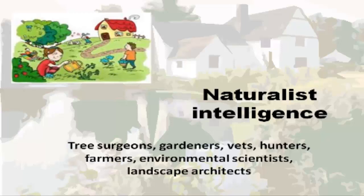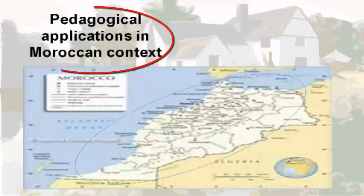Naturalist intelligence simply means understanding nature. People with this intelligence can discriminate among living things like plants and animals, identify and categorize rocks, know about clouds, the sky, the earth, forests, and everything related to nature. Examples include tree surgeons, gardeners, vets, hunters, farmers, and environmental scientists — people who can understand and help heal the environment.